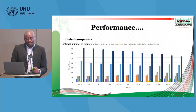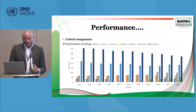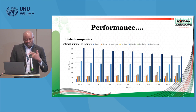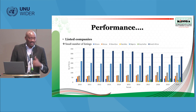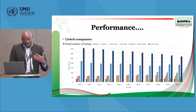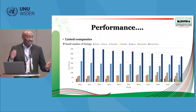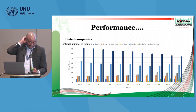In terms of number of listed companies, only South Africa and Nigeria have over 200 companies listed. The rest have below 100. Nairobi averages about 50 listed companies, despite the many companies that exist in these economies.